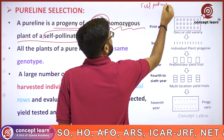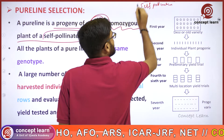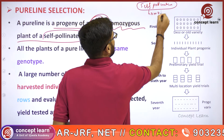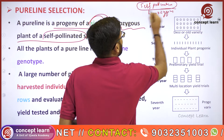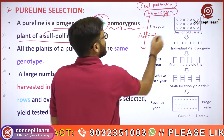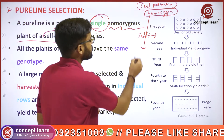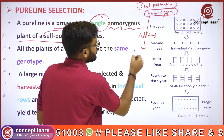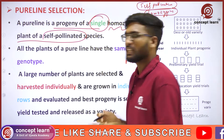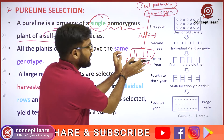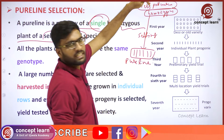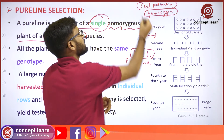For example, this self-pollinated species is a self-pollinated plant that is in homozygous condition. This homozygous plant undergoes self-pollination. If we have a progeny, we will do pure line. The progeny is obtained by using self-pollination from a single self-pollinated homozygous plant.